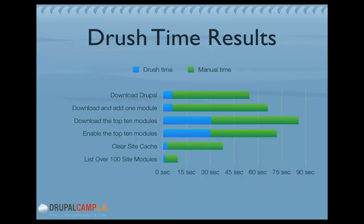Enabling those modules took over a minute in Drupal — clicking all the checkboxes after visiting the modules administration page, clicking submit, and waiting for the page to confirm the modules were enabled. Through Drush, that was done within 30 seconds by typing 'drush enable' followed by each module name. Clearing a site cache — something developers and themers do constantly — can take almost 45 seconds in standard Drupal administration. With Drush, it takes just a few seconds.